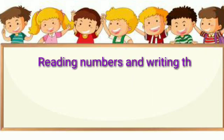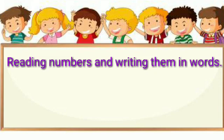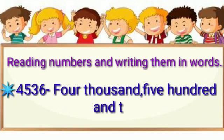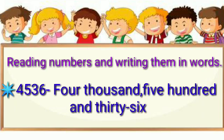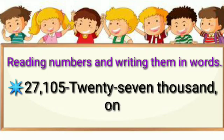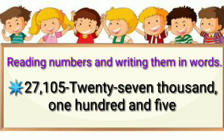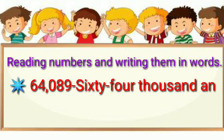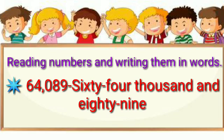Reading numbers and writing them in words. 4 hundreds, 5 tens and 3 tens and 6 units is read as 4,536. 2 tens, 7 thousands, 1 hundred and 5 units is read as 27,105. Next: 6 ten-thousands, 4 thousands, 8 tens and 9 units is read as 64,089.